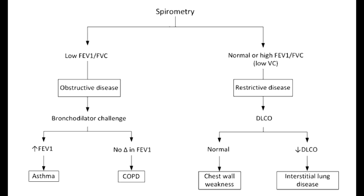Name all the causes of Intrinsic Restrictive Lung Disease. The intrinsic causes include Acute Respiratory Distress Syndrome, Neonatal Respiratory Distress Syndrome (hyaline membrane disease), and Pneumoconiosis such as anthracosis, silicosis, and asbestosis. Sarcoidosis can lead to Restrictive Lung Disease, in which there is bilateral hilar lymphadenopathy, non-caseating granulomas, increased angiotensin-converting enzyme, and calcium. Idiopathic pulmonary fibrosis can also lead to Restrictive Lung Disease, involving a repeated cycle of lung injury followed by wound healing, which increases collagen deposition.